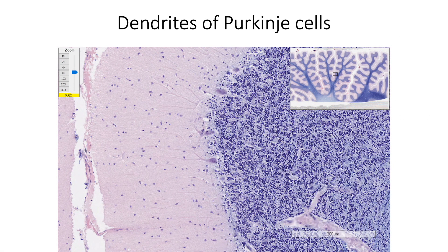Here we can see the flattened dendritic tree of the Purkinje cells in the molecular layer. The proximal branches are smooth and they synapse with climbing fibers, whereas distal smaller branches have numerous spines on their surface and they synapse with parallel fibers.